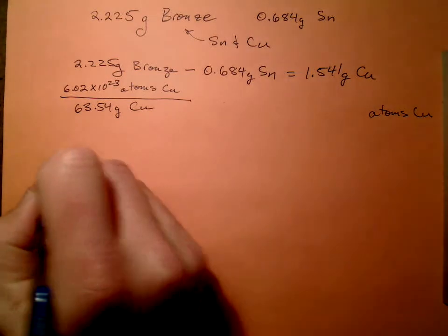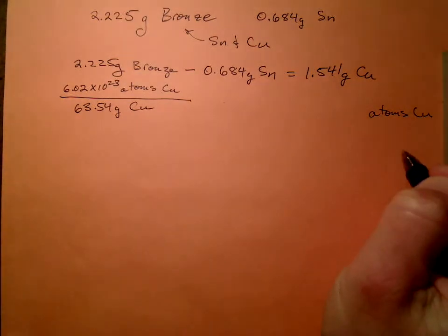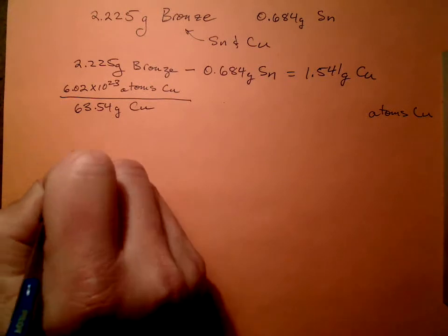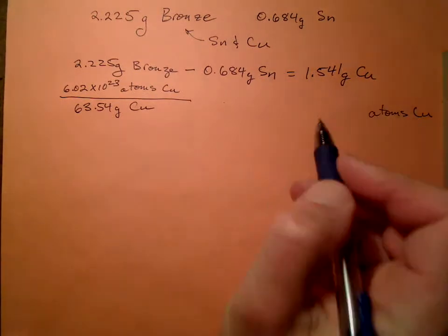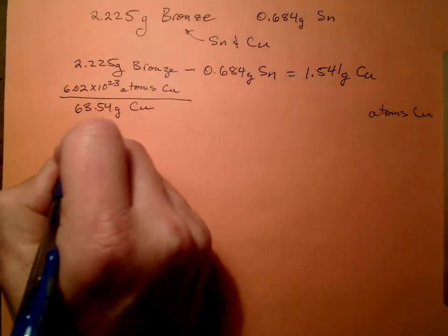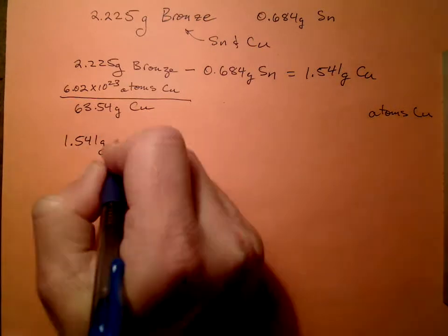So we're going to start with, use our rule of thumb. This isn't something per something. So I'm not going to start with something per something. So I'm going to start with copper because that's what I'm ending with. 1.541 grams of copper.